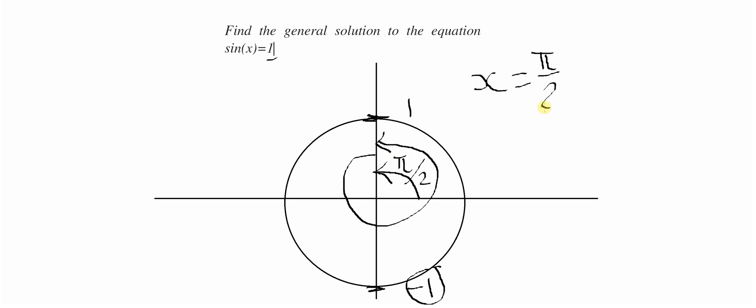So a full revolution in the unit circle is 2 pi radians. You could say the answer could be pi over 2 plus 2 pi radians. But then you could just go another pi over 2 and then just get the same answer again.